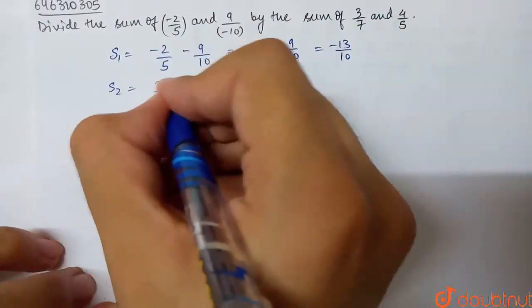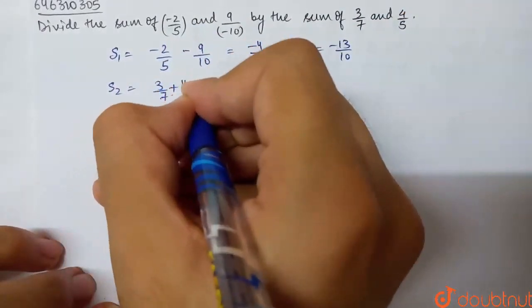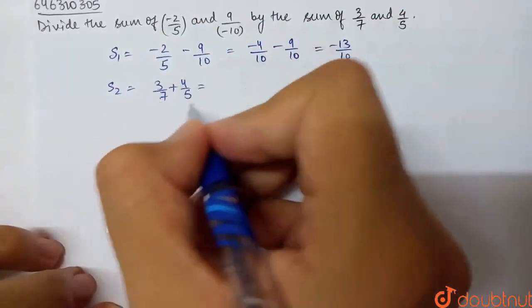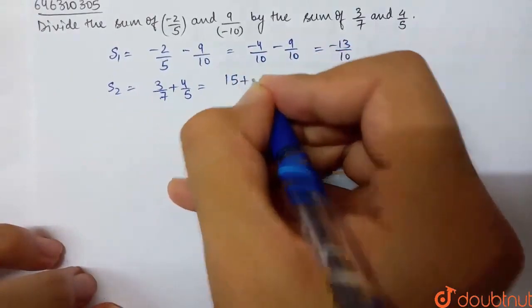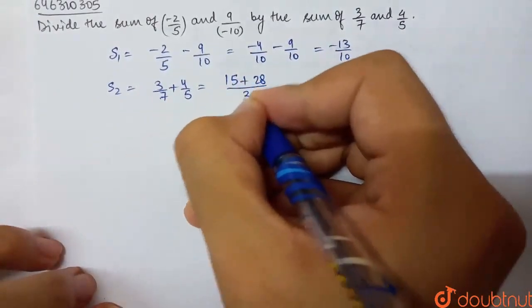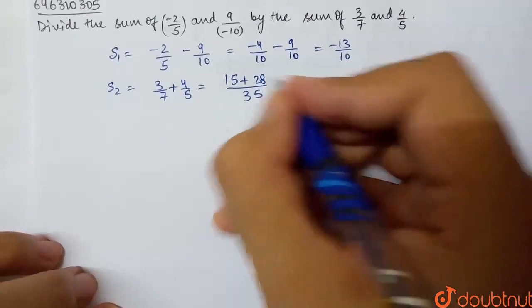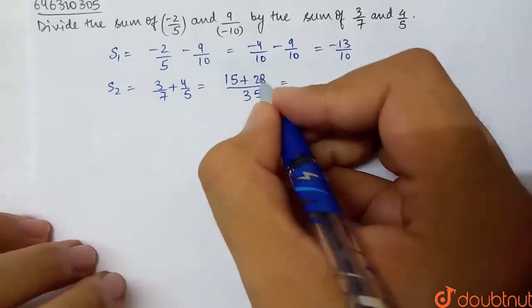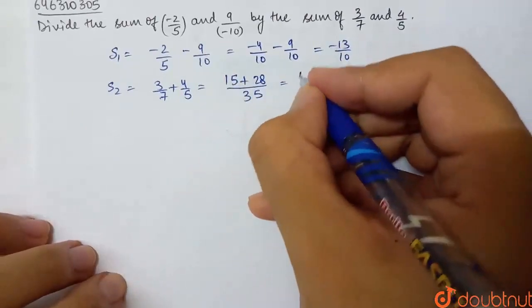Similarly, sum 2 is 3/7 plus 4/5. This is my sum 2. So cross multiply. What is this? 5 times 3 is 15 plus 7 times 4 is 28 over 7 times 5 is 35. So 15 plus 28, what is this?